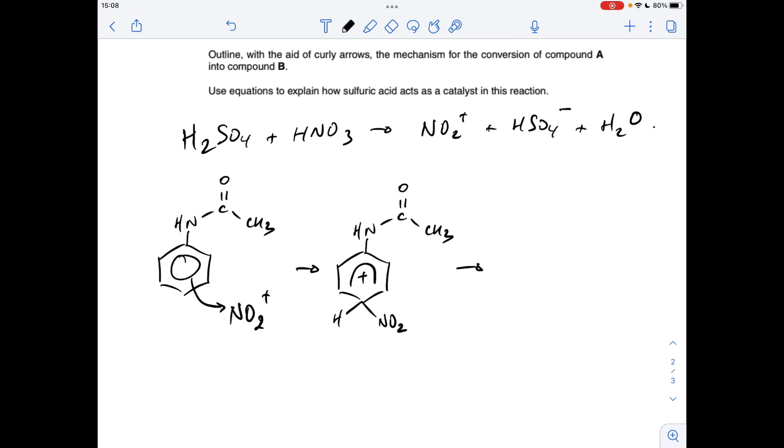And then all I need to do is take a pair of electrons from the carbon-hydrogen bond and go back into reform that delocalized pi electron system. So that's going to give me my product and an H+ ion. And then all we need to do is show how the sulfuric acid acts as a catalyst.